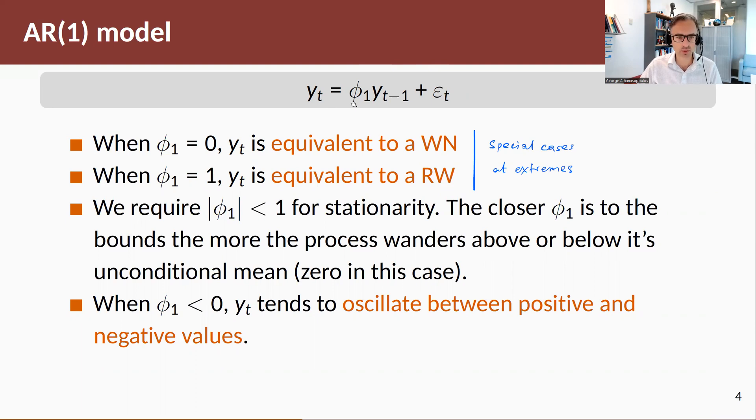We require phi_1 to be between -1 and 1 for stationarity. The closer phi_1 is to these boundaries, the closer to wandering behavior above or below the conditional mean we get.